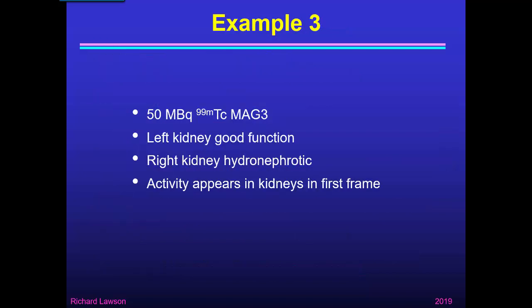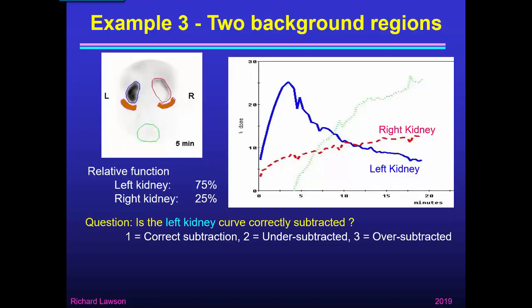That was a difficult example with DTPA and poor function. Here's another patient — this patient used 50 MBq of Technetium MAG3. The left kidney has good function; the right kidney is hydronephrotic. Once again, activity appears in the kidneys in the first frame, so we don't need to worry about any delay. At the 5-minute image, you can see good function in the left kidney, and the right kidney is hydronephrotic — just a little outer rim of parenchyma and a big dilated pelvis in the middle.